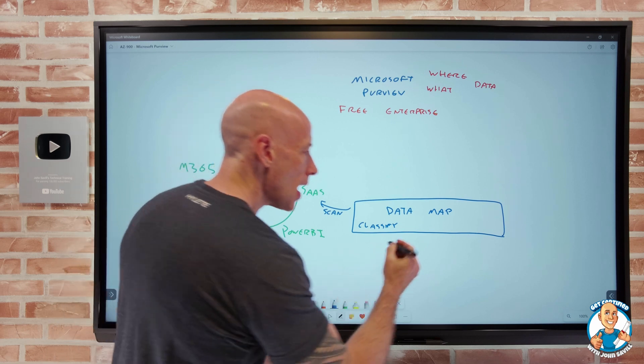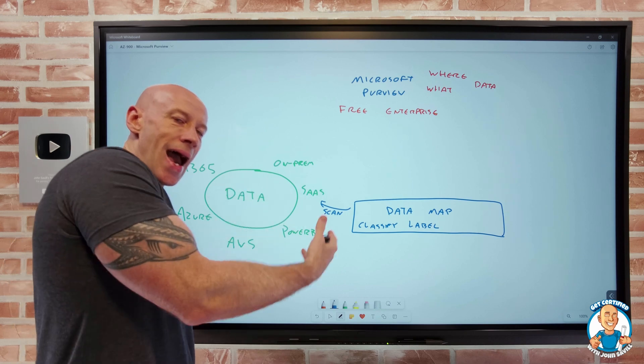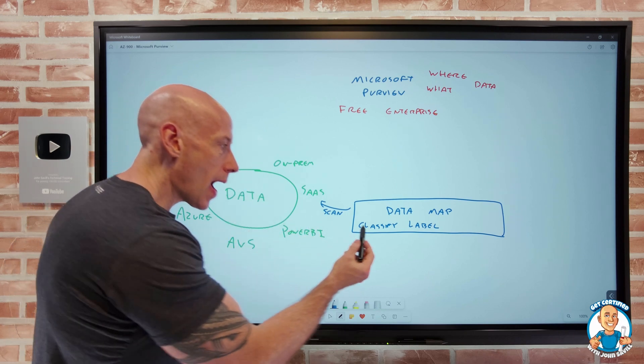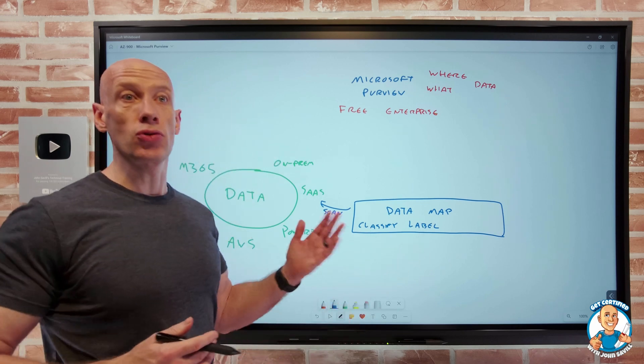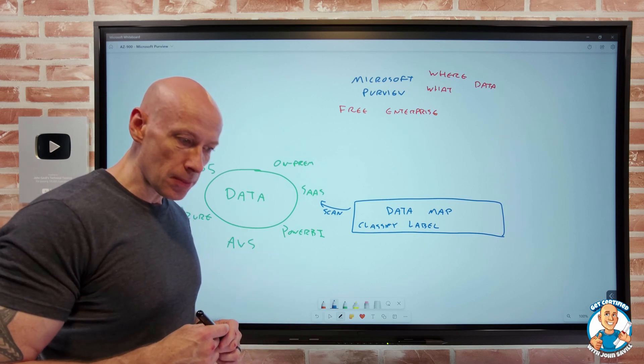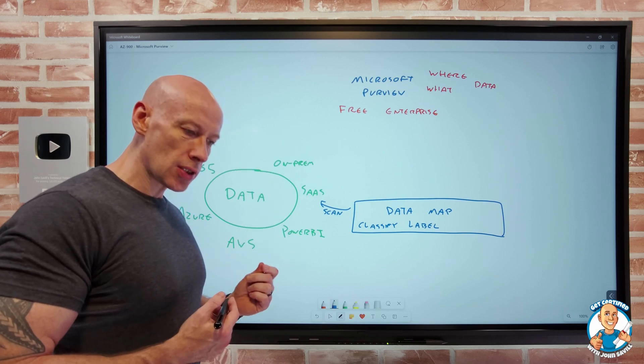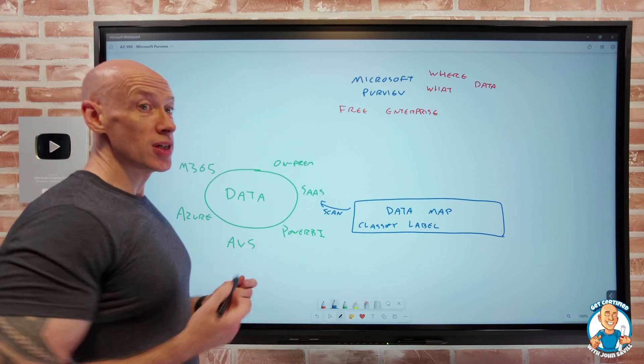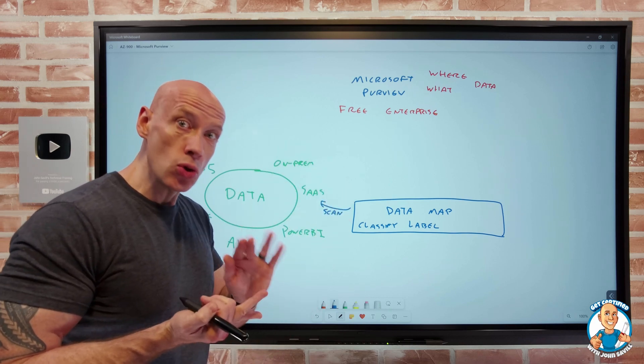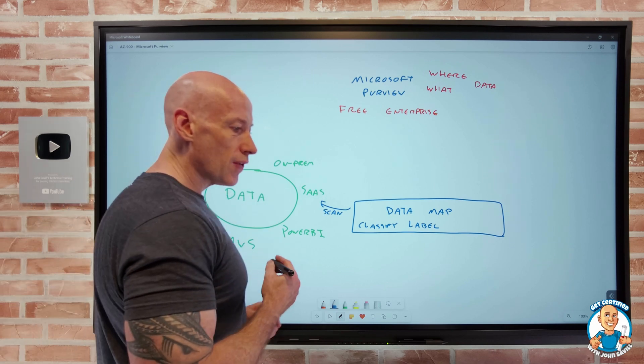I then may want to apply sensitivity labels, which is metadata added to the data that I could then act on based on the classification. So I find a social security number, I'll add a label of PII or highly sensitive. Those labels could then be used to trigger other actions. For example, maybe through M365, it is data leakage prevention. It might be data retention. It might be make sure you delete the data after N number of days.